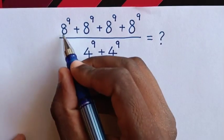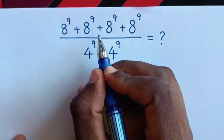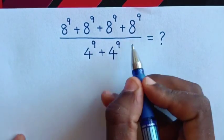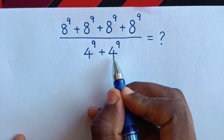Hello, how to solve 8 power 9 plus 8 power 9 plus 8 power 9 plus 8 power 9 over 4 power 9 plus 4 power 9.